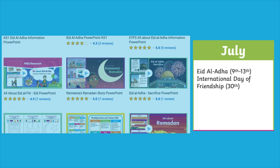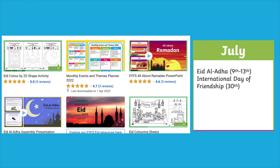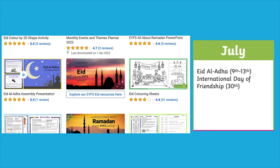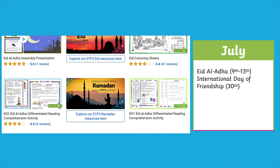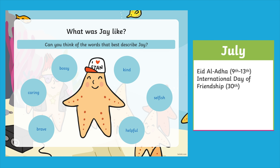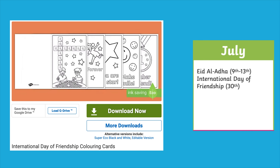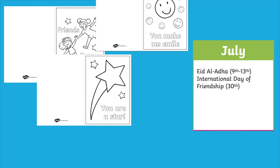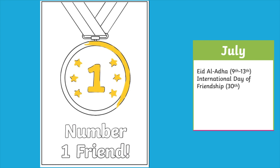Our resources explore different religious festivals and celebrations. You could also celebrate different international days using our resources. For example, on International Day of Friendship why not take a look at our Twinkl original story Starry-Eyed Sam which explores friendship. Or children could have fun with this set of colouring cards. What special friend could they make a card for?